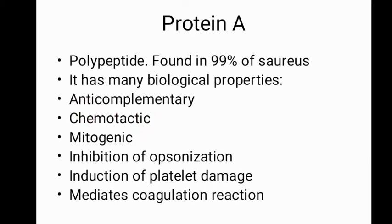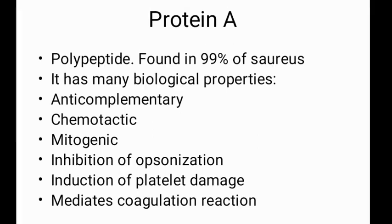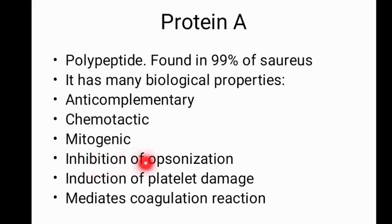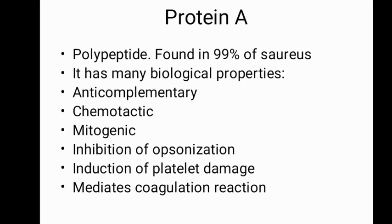Other properties of Protein A include chemotaxis — directing the movement of microorganisms in response to chemical stimuli in the human body, allowing Staphylococcus to escape immune responses. It is also mitogenic, meaning bacteria undergo mitosis more rapidly to produce greater numbers. Additional properties include inhibition of opsonization (previously discussed), induction of platelet damage, and mediation of coagulation reactions by converting fibrinogen into fibrin, causing blood clots. These conclude the cell wall-associated factors.